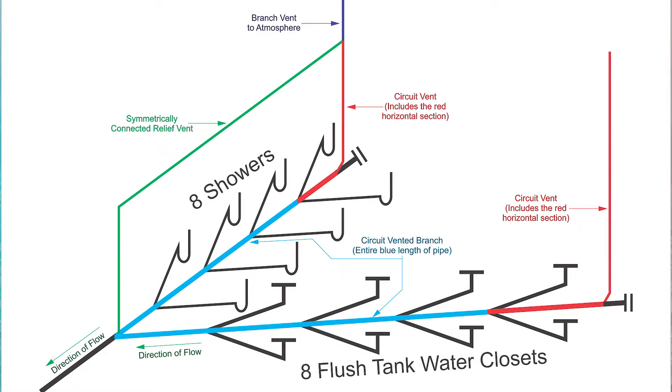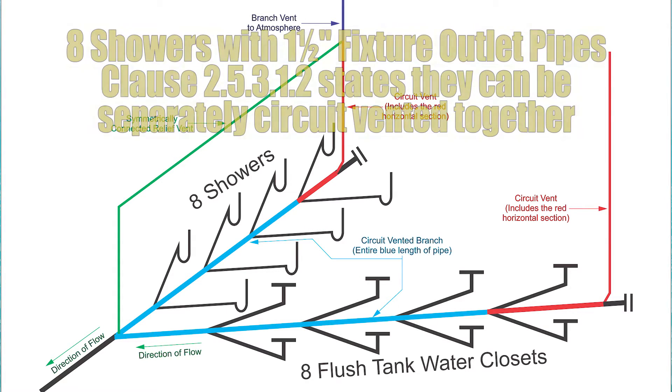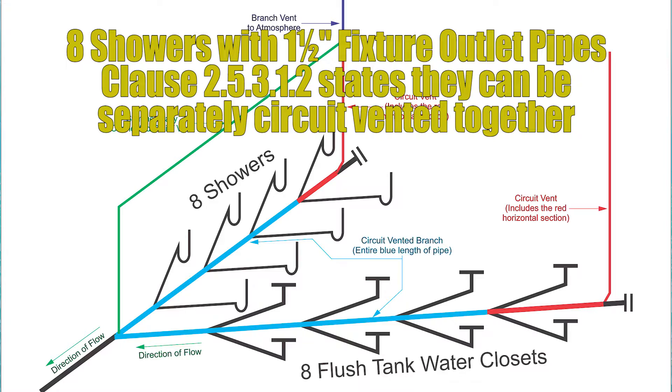When we first look at this diagram, let's point out something that happened in Clause 2 there. We have eight showers with one and a half inch fixture outlet pipes that are circuit vented together, so that's what it could look like.